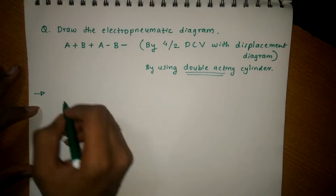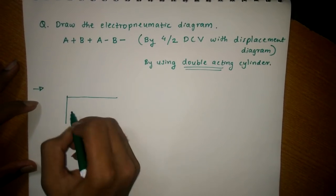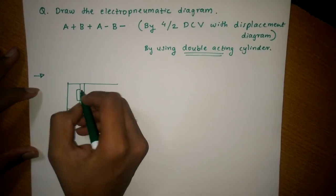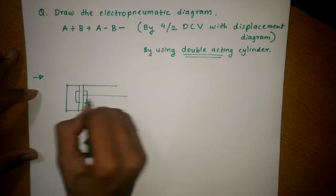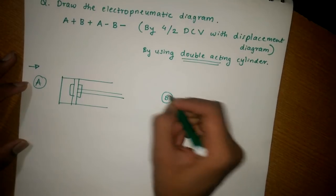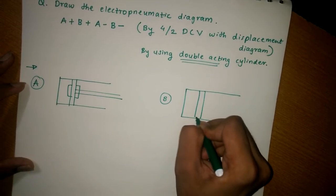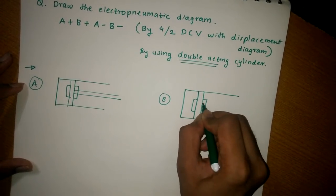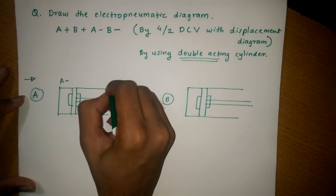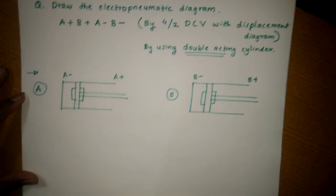Double-acting cylinder — you have to draw first the symbol of a double-acting cylinder. This cylinder is for A and this one is for B. This is your A minus, this is your A plus, B minus, B minus, and B plus.